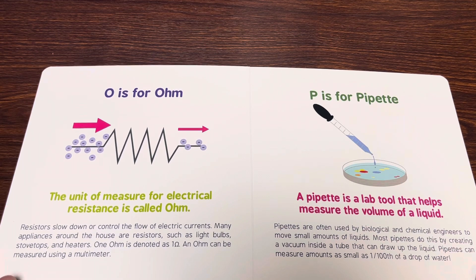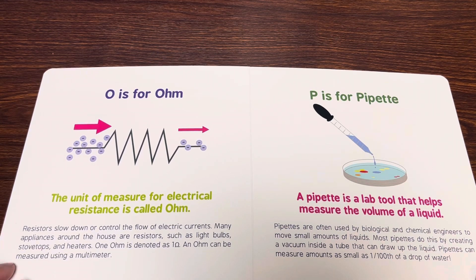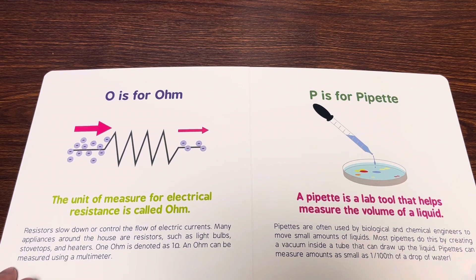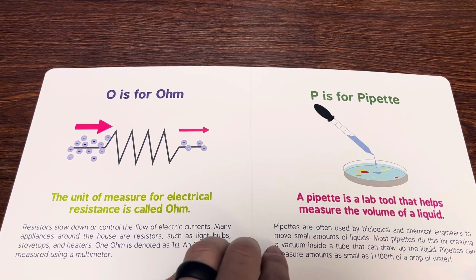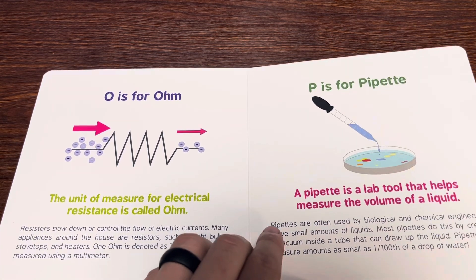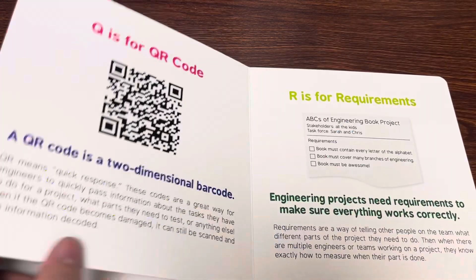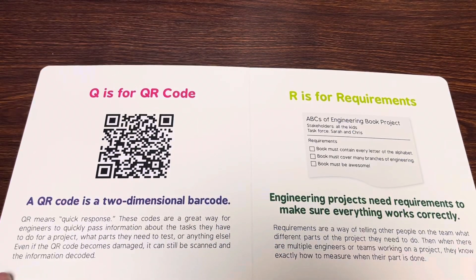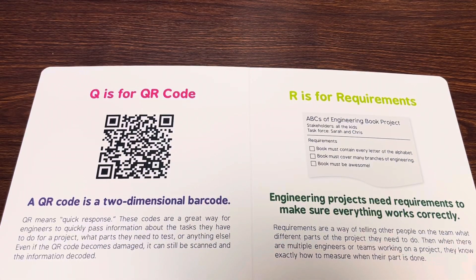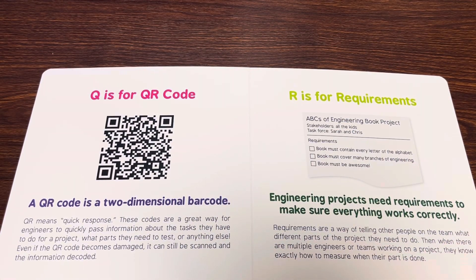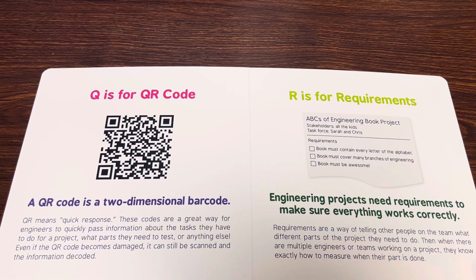P is for pipette. A pipette is a lab tool that helps measure the volume of a liquid. Q is for QR code. A QR code is a two-dimensional barcode.